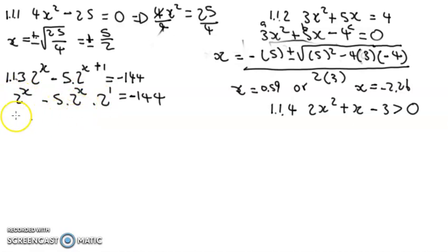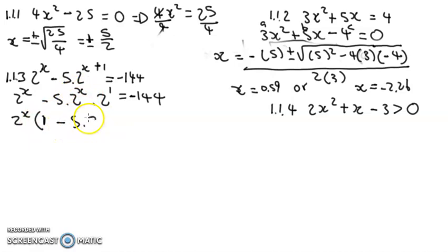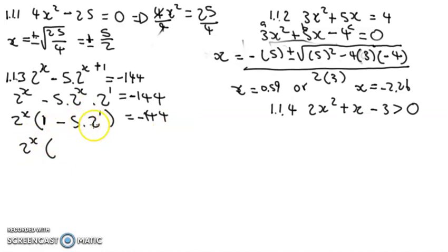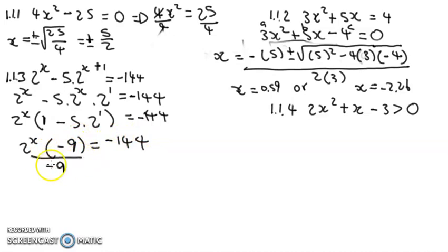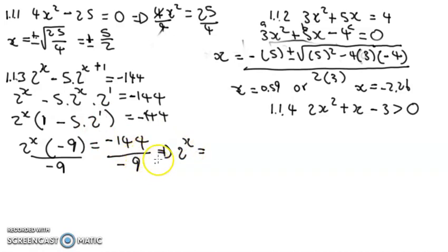Looking at both sides, we have 2^x on each side, so we take out 2^x as a common factor. After factoring, 2^x goes into the first term once, and in the second term 2^x cancels, leaving 5 × 2¹. That gives us 1 − 10 = −9 inside the bracket, so we have 2^x × (−9) = −144. Dividing both sides by −9, we get 2^x = 16.